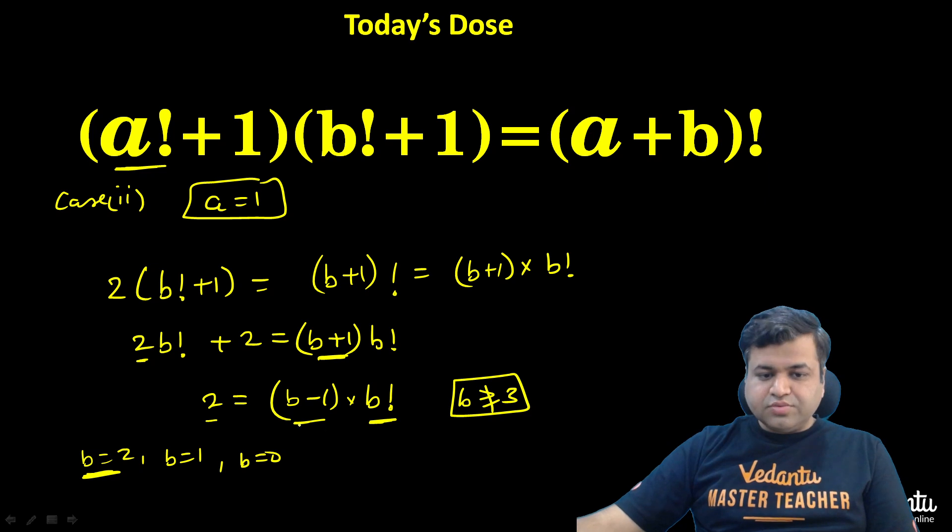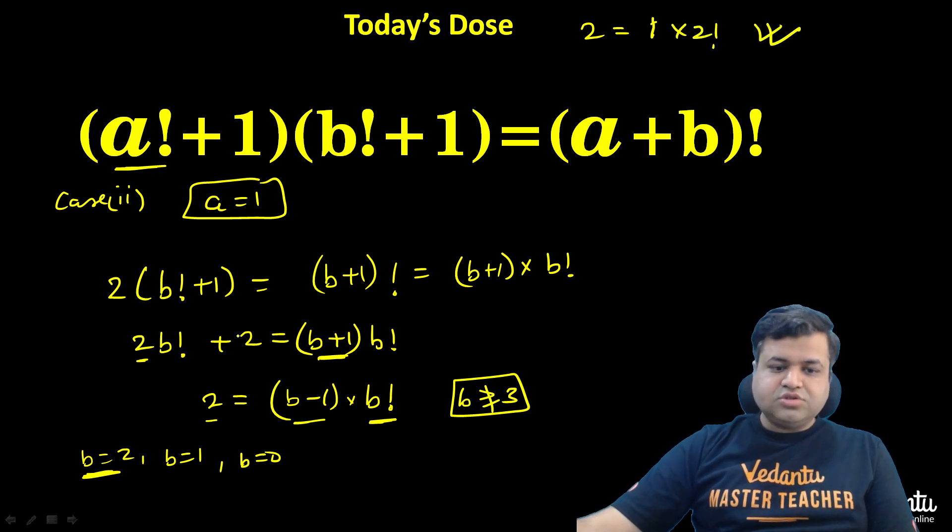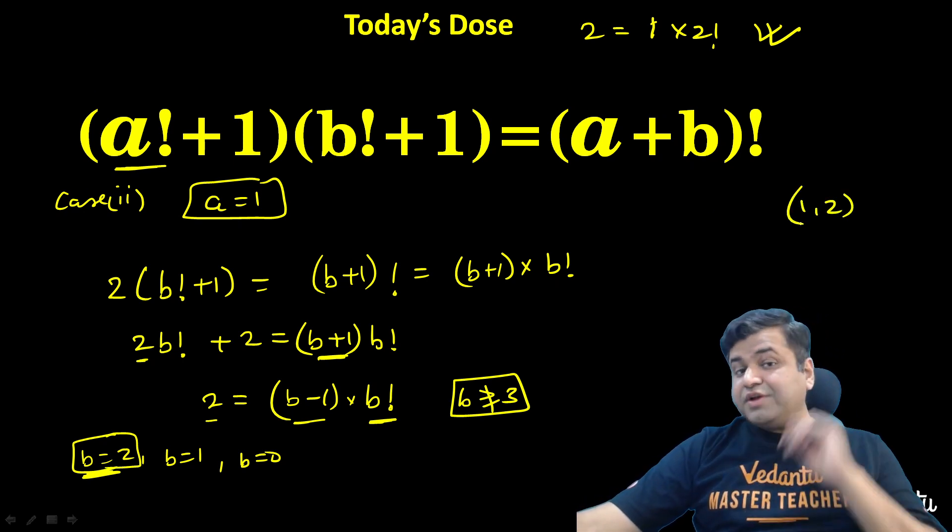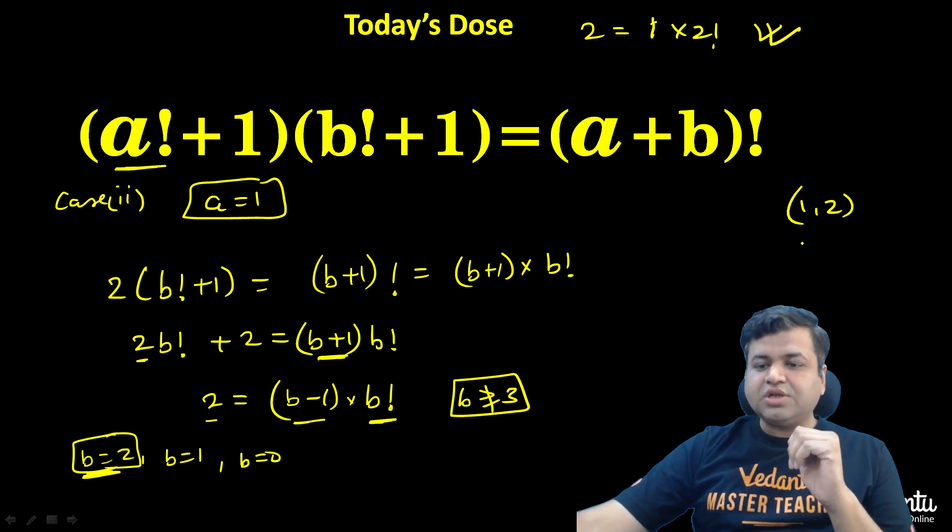Let's substitute b equals 2. If we substitute b equals 2, what we will get? 2 will equal 2 minus 1, that is 1 multiplied by 2 factorial, which is true. So a equals 1, b equals 2 is one of the solutions. So one solution is 1 comma 2. And since previously we said if x comma y is a solution, then y comma x will also be a solution. So another solution will be 2 comma 1.